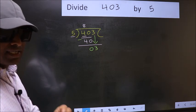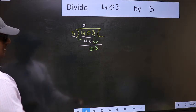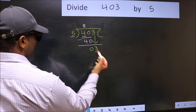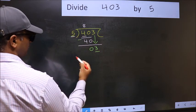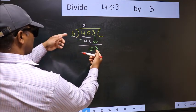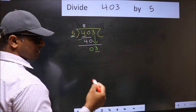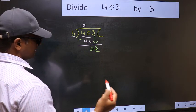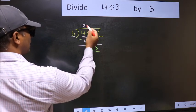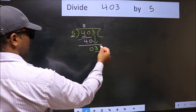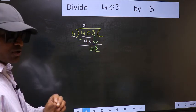And the mistake is this: here we have 3 and here 5. 3 is smaller than 5. So what many do is they directly put dot and take 0, which is wrong.